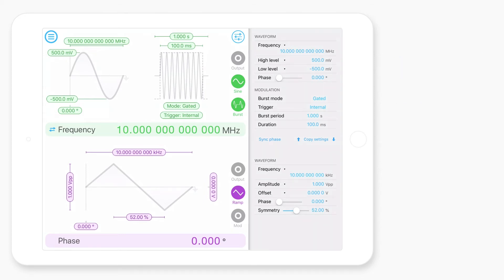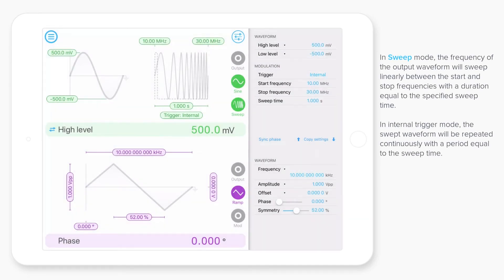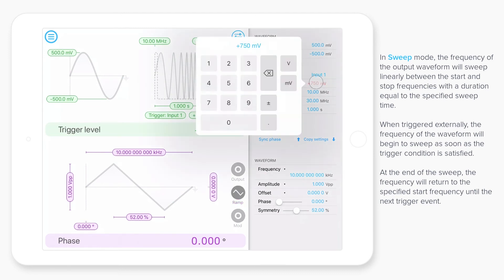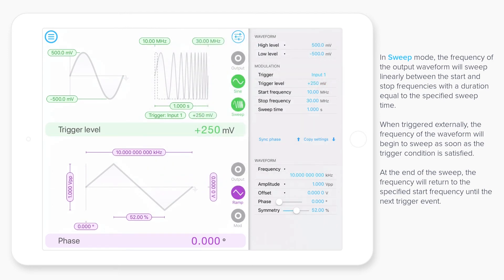The final modulation option is sweep mode, which when configured with internal triggering, will continuously sweep the frequency of the output waveform from the start frequency to the stop frequency, with a duration equal to the specified sweep time. With external triggering, the sweep will begin as soon as the trigger condition is satisfied. And at the end of the sweep, the frequency will turn to the start frequency, and will not sweep again until the next trigger event.